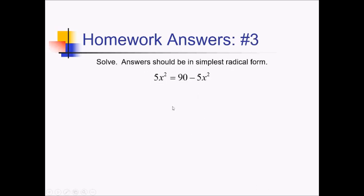For this problem, we have only squared terms and constants, so I can solve by square rooting. Let me first add 5x squared over to the left side, just so I have like terms with each other, so that will be 10x squared over on the left side. And then dividing both sides by 10, I have x squared equals 9. And now I can just square root both sides — on the left side I've just got x, and on the right side, since I'm square rooting an equation, this is going to be plus or minus square root of 9, which is plus or minus 3.